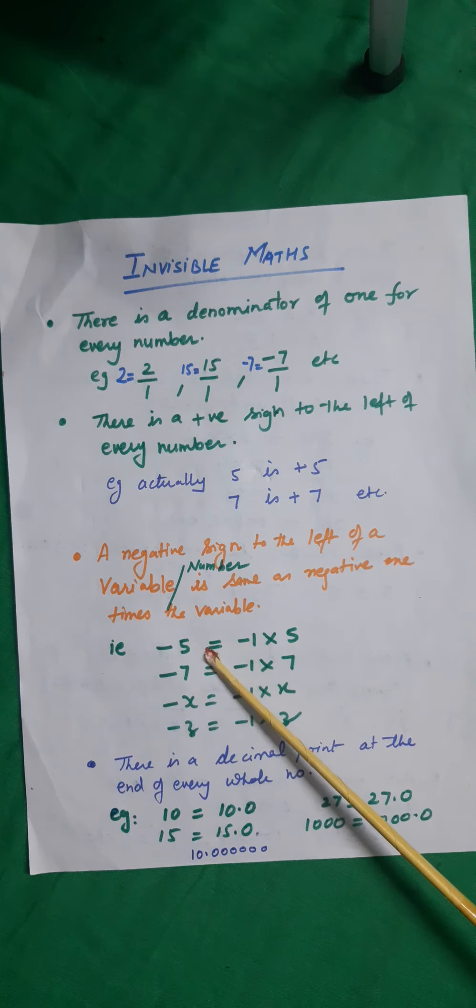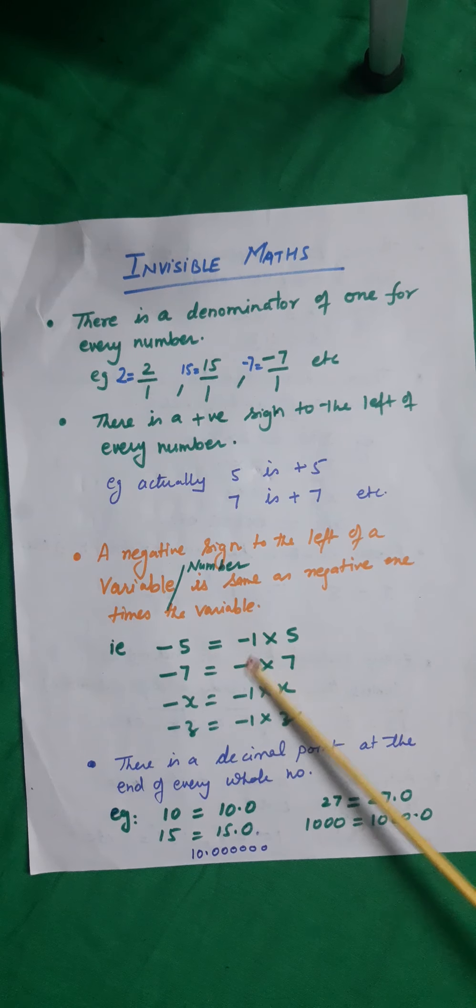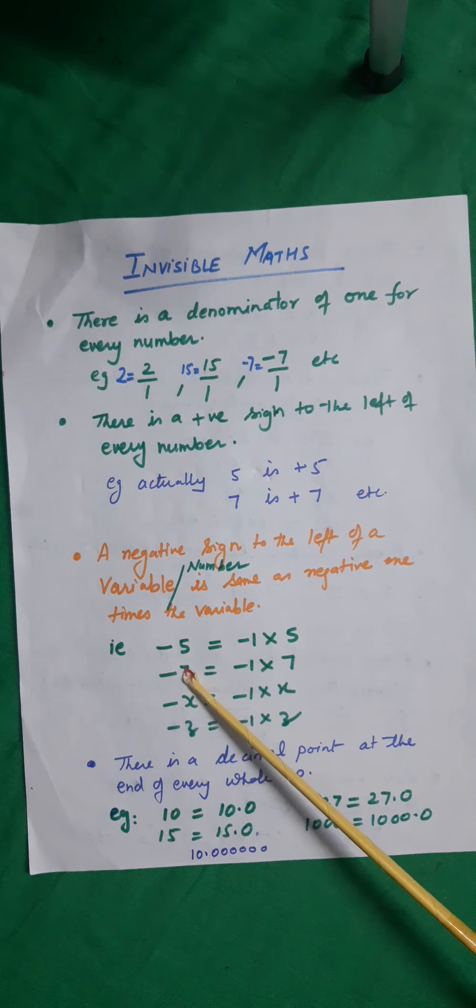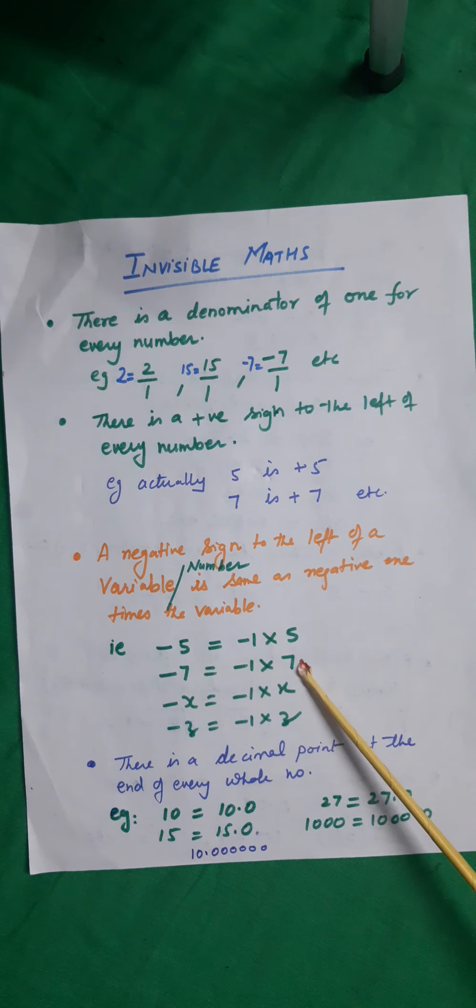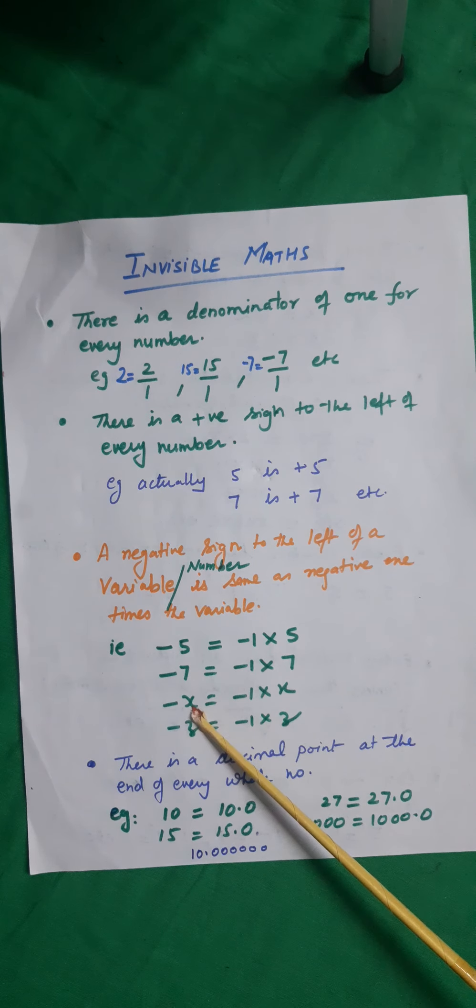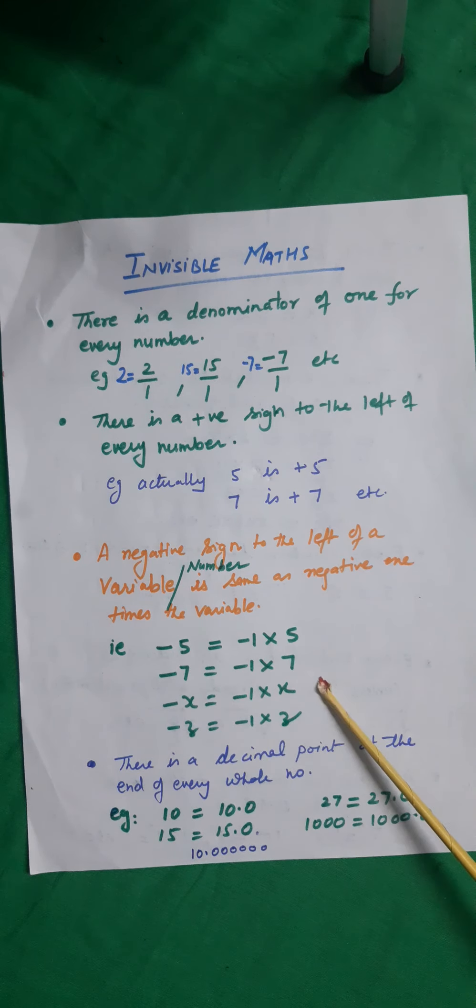Minus 5 is actually the product of minus 1 and 5. Minus 7 is minus 1 into 7. Minus x equals minus 1 into x. Minus z can be expressed as minus 1 into z.